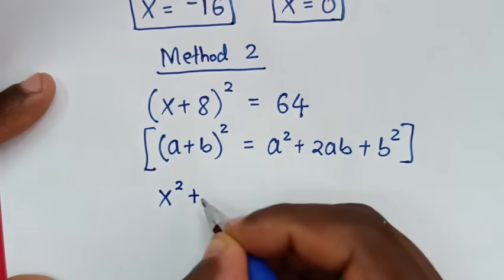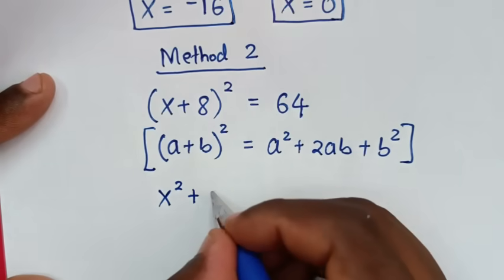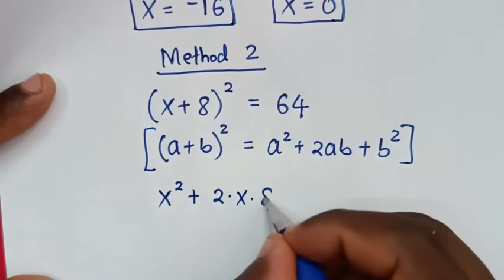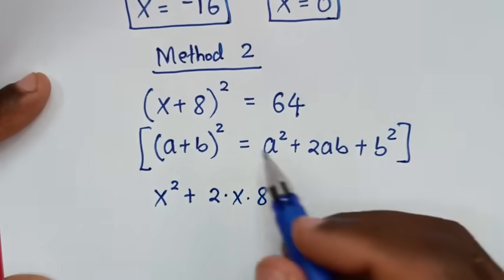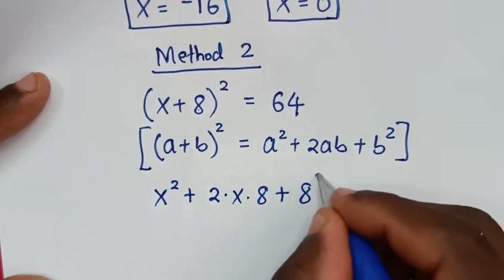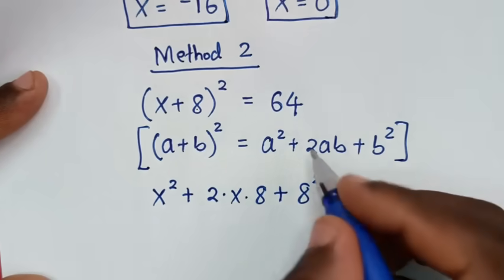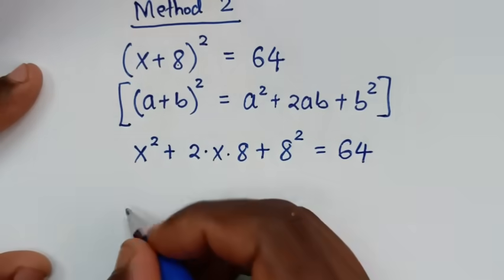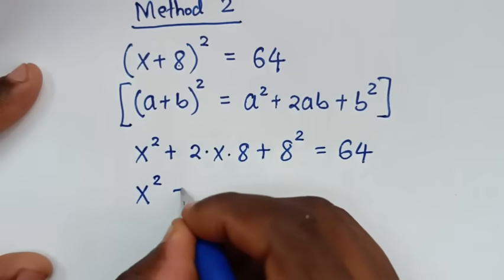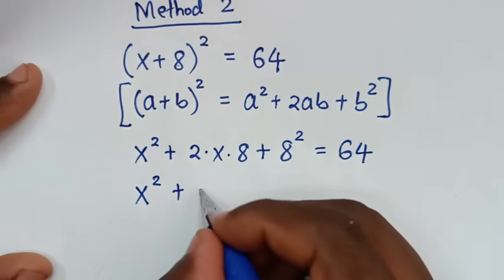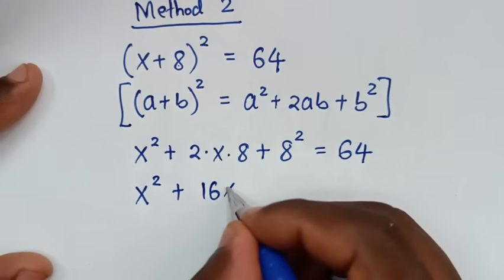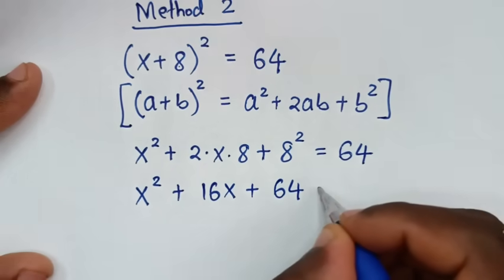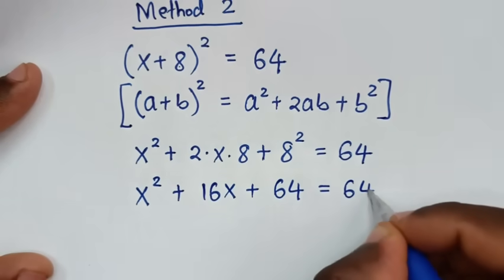Expanding (x + 8)²: it will be x² plus 2 times x times 8, plus 8², which equals 64. So x² + 16x + 64 = 64.